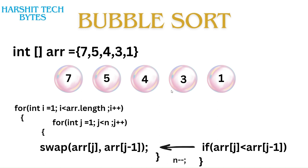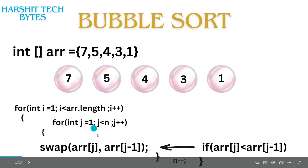The first outer for loop goes from 1 to arr.length minus 1, and the second inner for loop also goes from 1 to arr.length minus 1. But we will see how we can perform bubble sort more efficiently, and we will understand that through visualization.